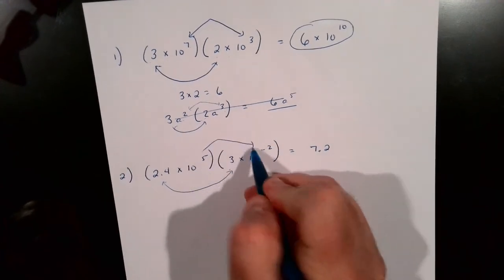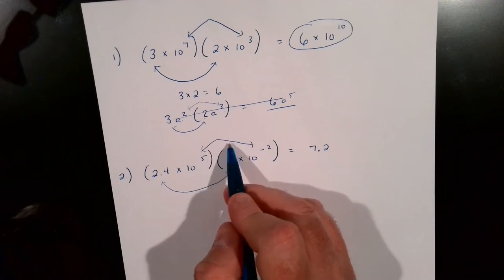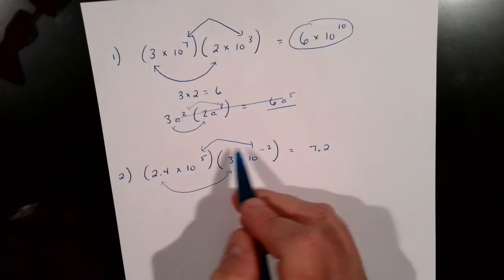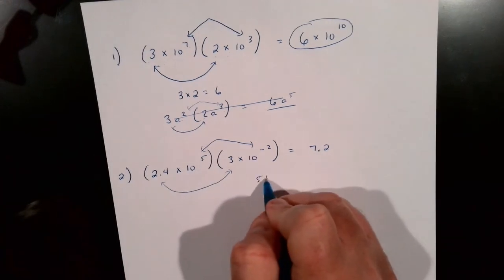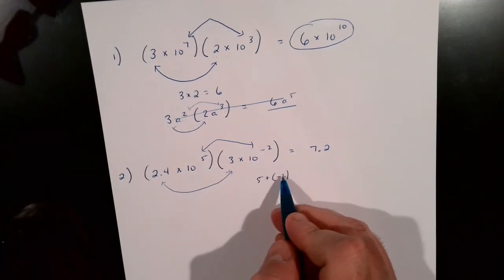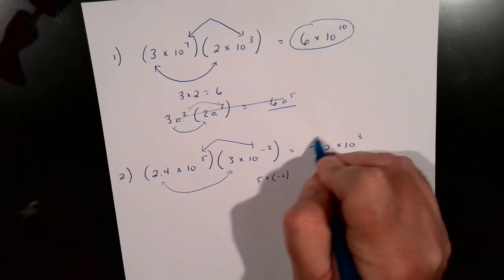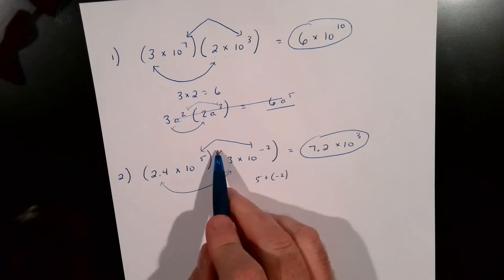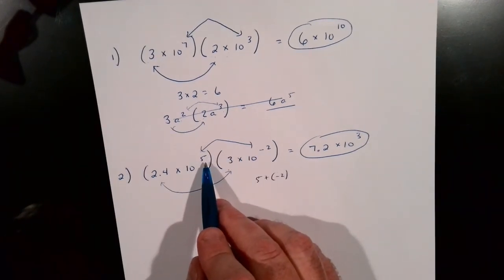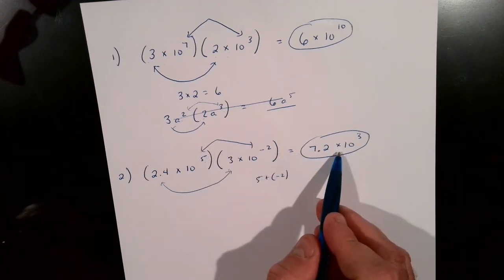And then when we're multiplying the exponents, we just add those. But be careful: 5 plus a negative 2 is not 7. Signs are different — we're actually taking away — and we end up with 10 to the 3rd power. So in your assignment, be careful and watch for the negatives. 5 plus a negative 2 becomes a positive 3.